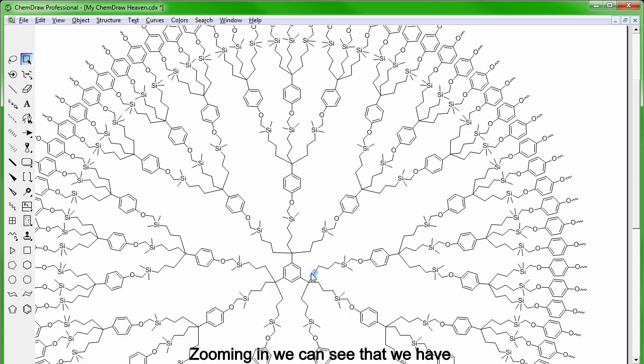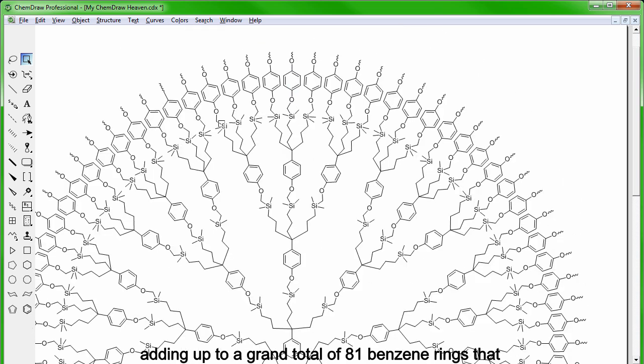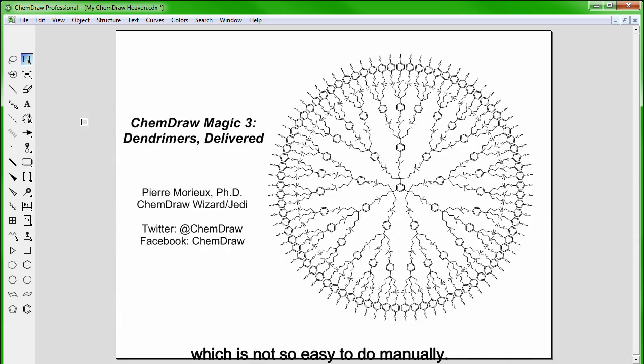Zooming in, we can see that we have a benzene core here with 3 branching points, another 3, then another 3, and finally another 3 adding up to a grand total of 81 benzene rings, that according to geometry, should be separated by 4.444444 degrees relative to the center of the structure, which is not so easy to do manually.